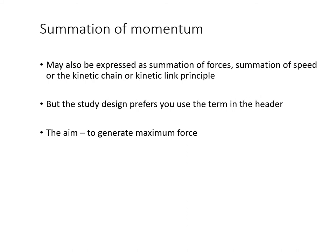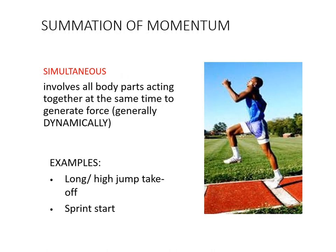The next concept under the umbrella of momentum is summation of momentum. To generate maximum momentum, we sum all our forces — previously called force summation. Please use the term summation of momentum. The kinetic chain or kinetic link principle underpins this. Summation of momentum can occur in two ways. The first is simultaneous — all body parts working together at the same time, explosively, to maximize momentum. Examples include long jump, high jump, and sprint starts, where there is a very dynamic and explosive movement from all body parts.